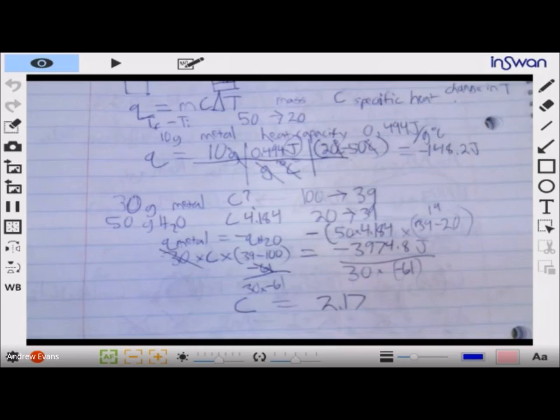But worst case scenario, we have to set two situations equal to each other. That's the hardest thing we could really do with a thing like this.